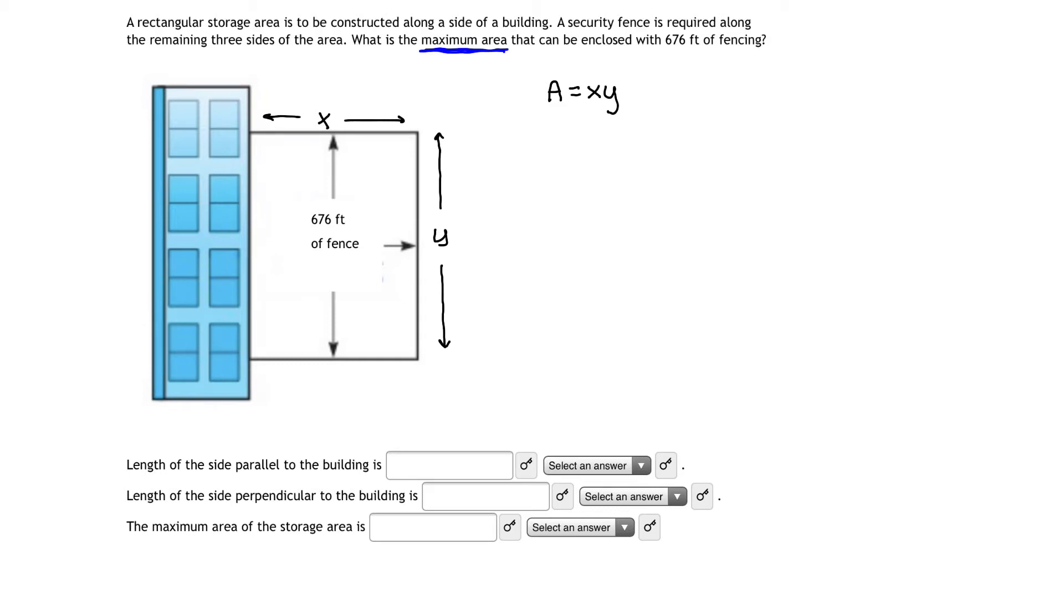We are told that this area is going to be enclosed with 676 feet of fencing. This tells me about the relationship between the x's and the y's. If I add another x to the other side, I can very quickly see that that length of fencing, 676, is actually equal to the distance of two x's and one y. So 2x plus y equals 676. This expression is what I can use to help get my area function in terms of one variable.